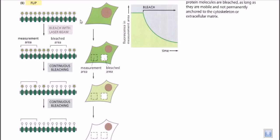The experiment is based on a simple concept: we take a cell and tag its phospholipids with a fluorescent dye. We can use a radioactive phosphate label or a fluorescent dye. In this experiment, we use a fluorescent tag to label all of the phospholipids present in the cell membrane.